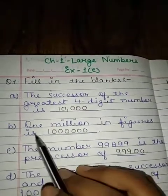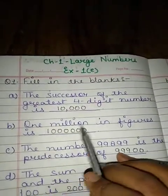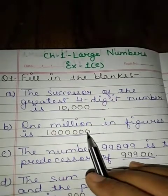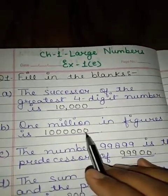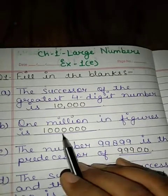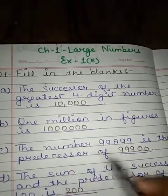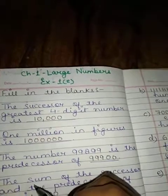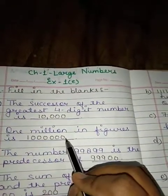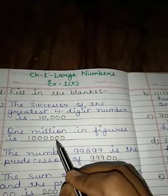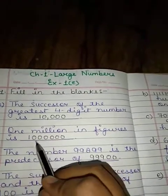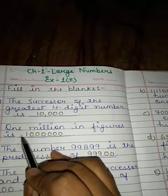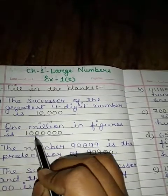Question number b: 1 million in figures. We have to write 1 million in figure in the international form of numeration. In the international form of numeration, after every 3 digits there is a separation. According to the period of the international form of numeration, we have ones, tens, hundreds, thousands, ten thousands, hundred thousands, and then million. So 1 million will be 1,000,000.